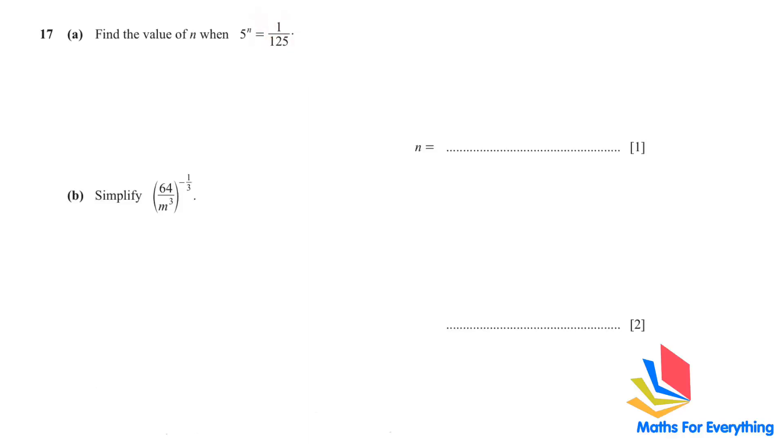Question 17a: find the value of n when 5^n equals 1 over 125. This is an indices or exponent question. You should remember that whatever base you have here, try to make 125 to the power of 5 to the power of something. If you check in the calculator, you'll get 5 to the power of 3 is 125. When you bring powers from the denominator to the numerator, the sign changes. So this becomes 5 to the power of negative 3. Because the bases are same, they get cancelled and n equals negative 3.